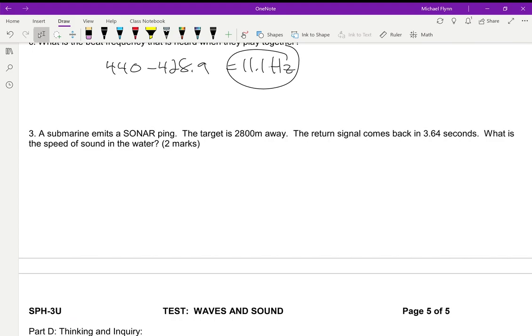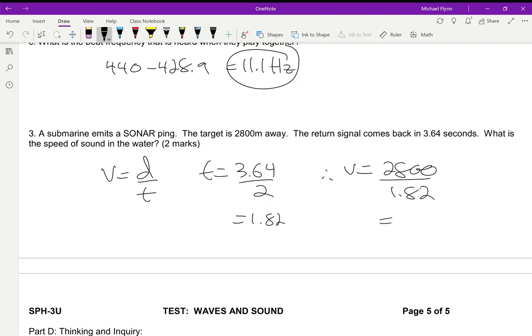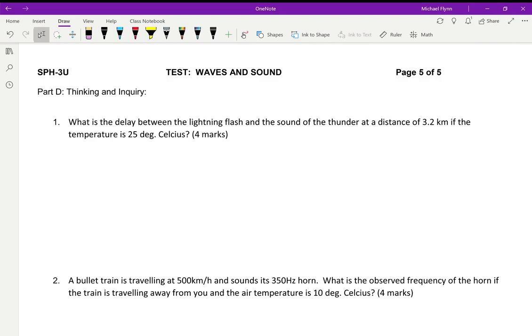Sonar question: the return comes back in 3.6. This is speed equals distance over time, but the time we're going to use is 3.64 divided by two, because it's a round trip. That's a round trip time, so it takes half the time to go 2800 meters. So it's 3.64 divided by two, which is 1.82 seconds. Therefore speed equals 2800 divided by 1.82. I get 1538 meters per second, and there you go.